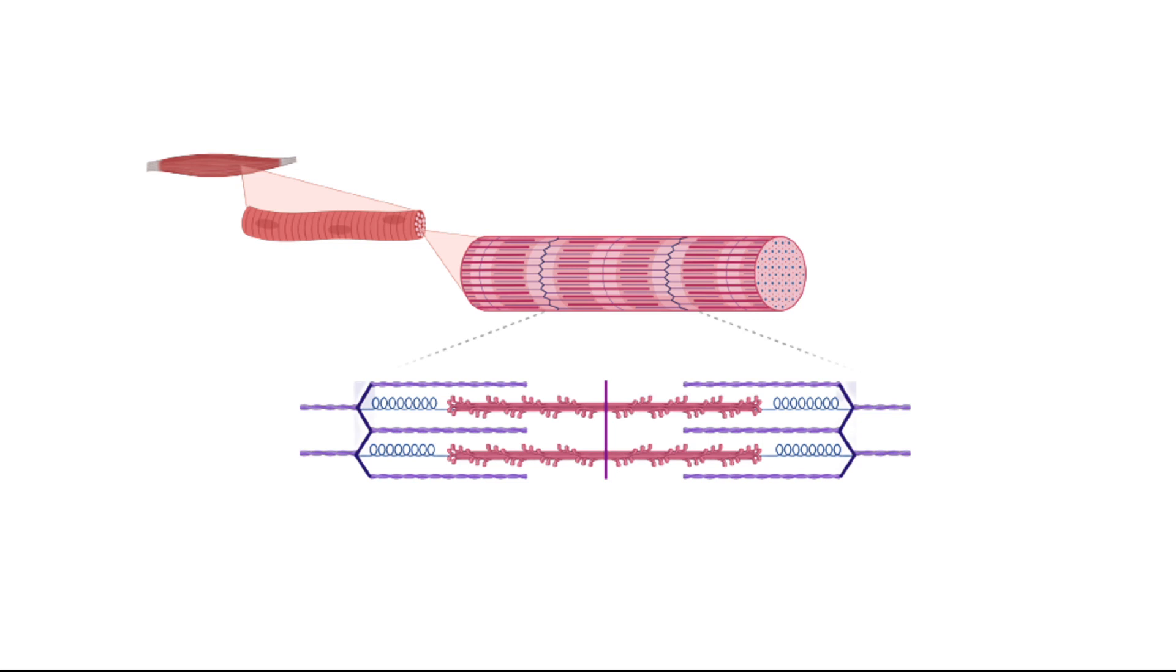We first have a muscle fiber, which contains muscle cells. And within each muscle cell, there are multiple myofibrils, which are rod-like organelles.